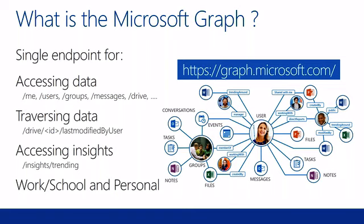A good example of that is Delve. Delve is a first visualization of the 'trending around me' graph endpoint. You can see that there are documents, Yammer conversations, links, messages also that are available in the graph. Everything is trending around you because it's the most important stuff that exists around you, and it's a good way to leverage that data.